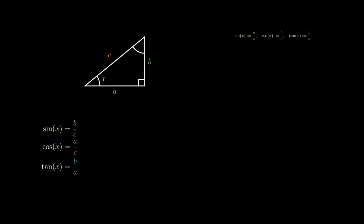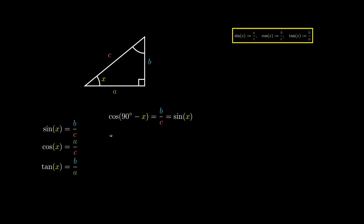These already help us establish that the cosine of 90 degrees minus X is the ratio of the side adjacent to the complement angle divided by the hypotenuse, which just so happens to be the sine of X. Likewise, the sine of the complement angle is equal to the side opposite the complement angle, A, divided by the hypotenuse C, which simplifies to the cosine of X.